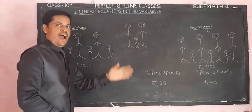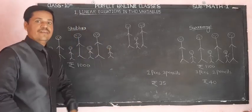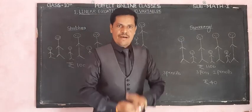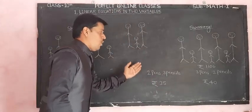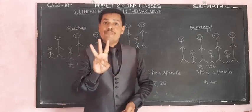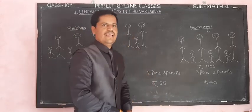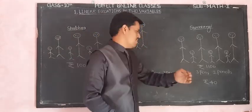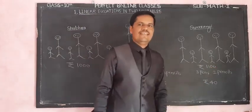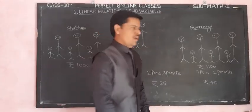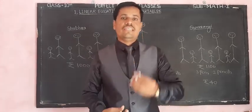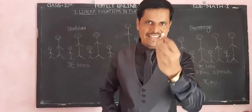Imagine that in your family there are three family members — two adults and one child. What amount of ticket would you pay? We also see another example: the cost of a bunch containing two pens and three pens is Rs. 35, and the cost of another bunch is Rs. 40. What is the cost of one pen?